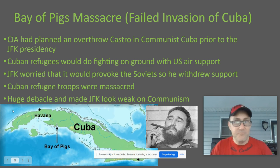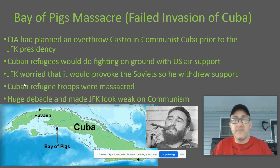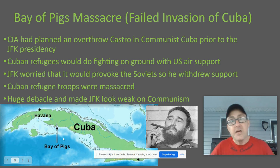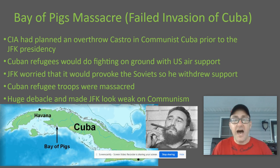The Cuban refugees say, forget it — they've been planning this for a couple of years and they're going ahead with or without American air support. We allow them to proceed and do give them some supplies as they go down and invade this little area known as the Bay of Pigs. When these guys go in and land on the beaches without any American air support, they get massacred and slaughtered. Castro's air force, artillery, and machine guns just cut them to pieces. They basically all get massacred or thrown into prison camps — POW camps. It's a huge debacle that does not go off as planned.